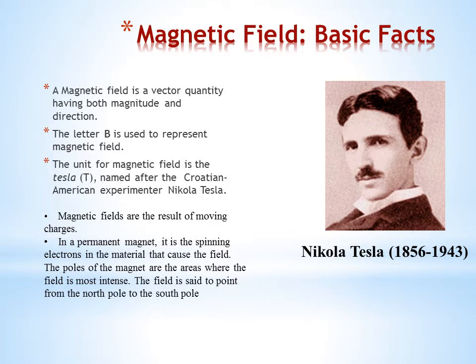Magnetic field is a vector quantity having both magnitude and direction. The letter B is used to represent the magnetic field. This is called the flux density. The unit for magnetic field is the Tesla, named after the Croatian-American experimenter, Nikola Tesla.